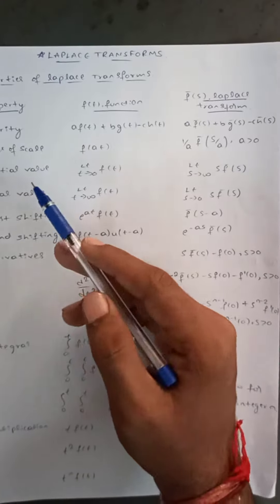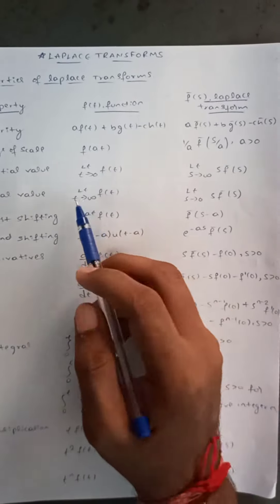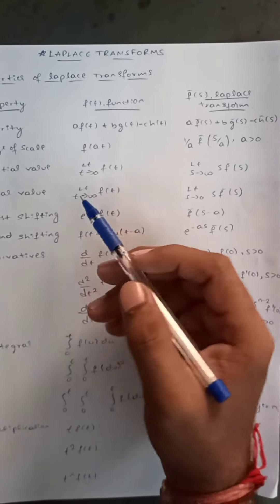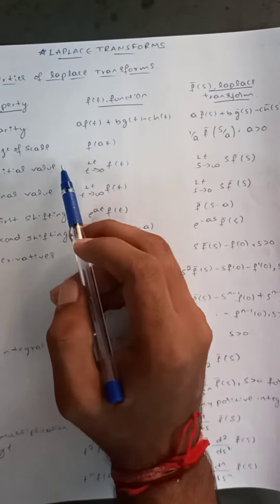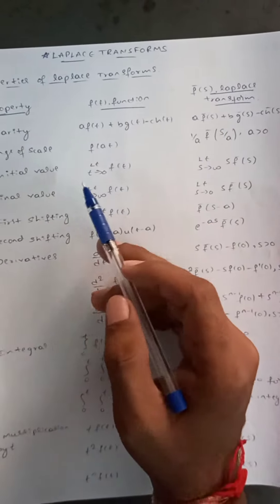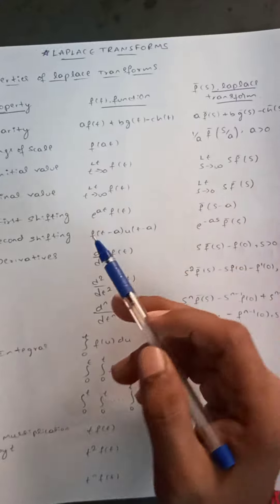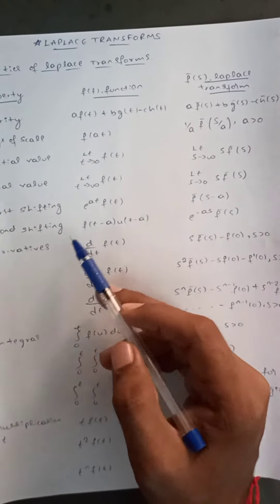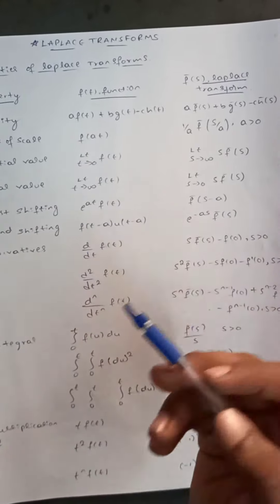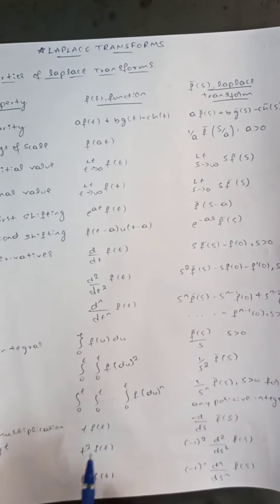In addition to linearity, some more properties are: change of scale, initial value, final value, first shifting, second shifting, derivatives, integral, and multiplication by t.